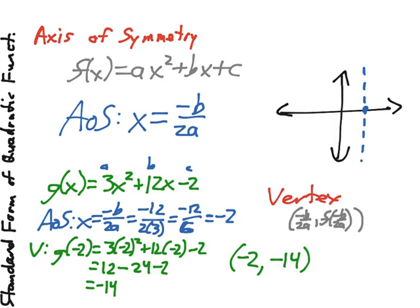our vertex will be located at negative 2, negative 14. Our a value is positive, so this will open up, and our a value is 3, so we'll be able to move out and up in the fashion that was spoken of earlier, and we'll go over one of those here in a minute.